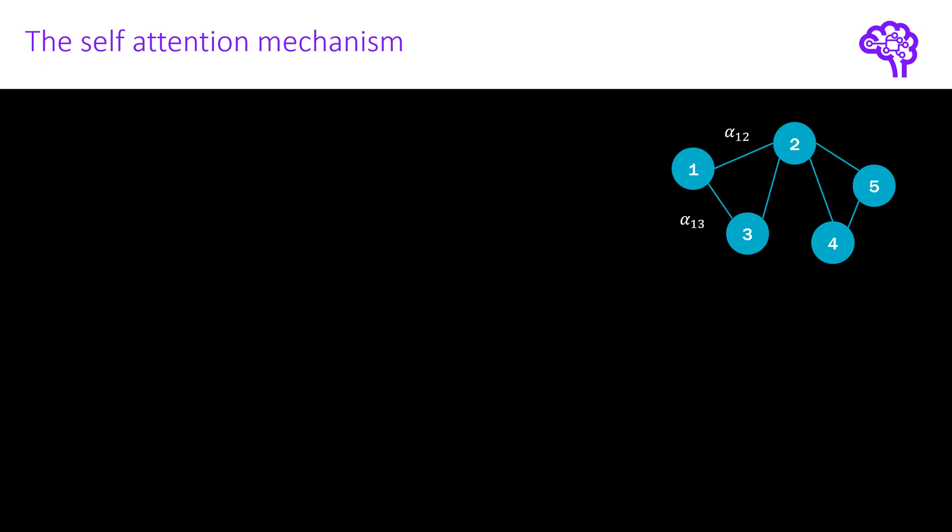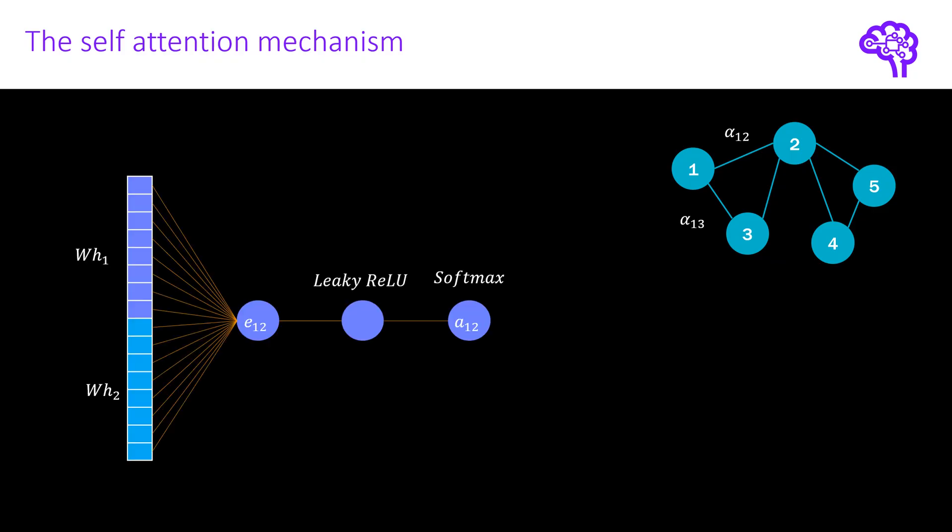First of all, there exist many different possibilities for calculating these attention coefficients. So the approach chosen in the graph attention network paper is just one possibility. In the paper, they simply choose a shared single-layer neural network. The input for this network are the two transformed node feature vectors for an edge. So, for instance, for node 1 and 2. And the output indicates the importance between these nodes, so the attention coefficient. This can be calculated for each node pair.